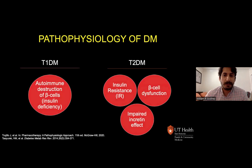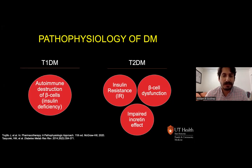As a quick refresher: type 1 is due to autoimmune destruction of the pancreatic beta cells, which ultimately leads to insulin deficiency. Type 2 is due to progressive pancreatic beta cell dysfunction, insulin resistance in the peripheral tissues such as the muscle, liver, and fat tissues, and impaired incretin effect.